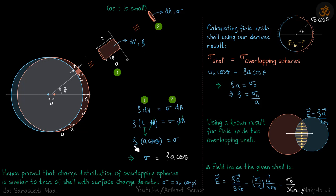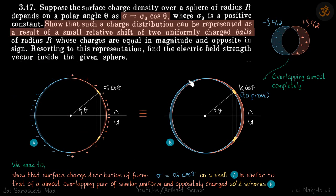Which is what we wanted to prove. Hence proved that charge distribution of overlapping spheres is similar to that of a shell with surface charge density sigma equals sigma not cos phi. We have proven the first part here. This charge density we have proven that it is similar to that of overlapping spheres.